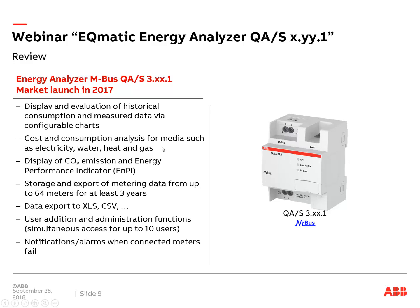Standard software features include displaying and evaluating data via the web browser, calculating energy performance indicators, seeing CO2 emission data, and manually exporting data to Excel or CSV. Maximum 10 users can access one energy analyzer simultaneously. Users have different rights: the administrator can do commissioning and meter configuration, while standard users have read access. When there is a meter failure — for example, a meter disconnected from the MBUS — information messages are generated.